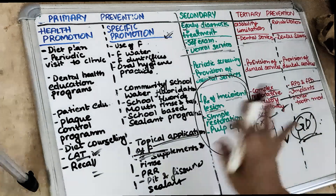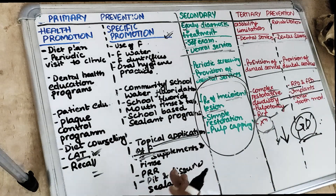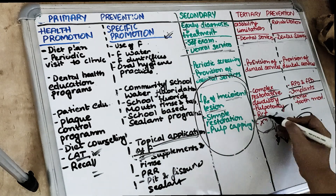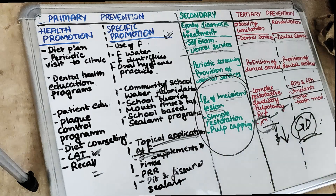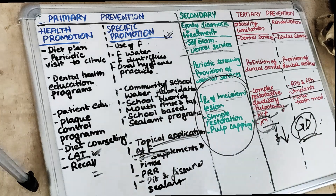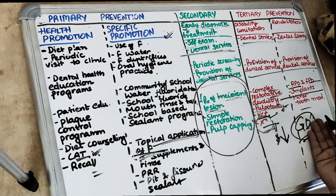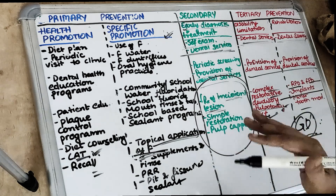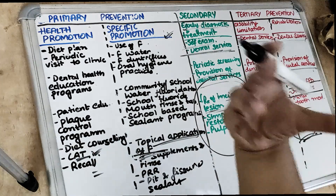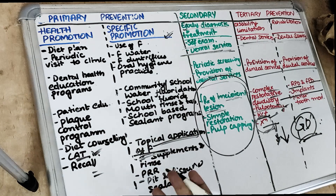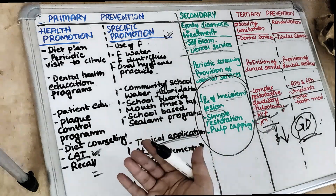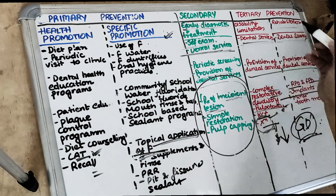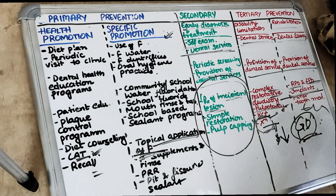At the tertiary level, caries has grossly decayed the teeth and the tooth cannot be saved anymore, or it is at the extreme level of caries involvement. Either we do root canal treatment, or if not, we go for extraction. If it is a pediatric patient, then pulpotomy. This is at the dental professional level. Then rehabilitation — if the tooth is extracted, how are we going to rehabilitate, meaning restoring back to normal function? We replace it with a removable partial denture, fixed prosthesis, implant, or complete denture.